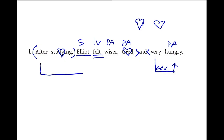The phrase 'after studying' together is functioning as an adverb, modifying the verb 'felt.' So we'll draw a line from this phrase to 'felt' and note that this is an adverbial phrase. But because it involves a preposition — 'after' is a preposition — 'studying' in this phrase is the object of a preposition, so it is also a prepositional phrase. We'll put PRP there to remind us that not only is it an adverbial phrase, but it contains a preposition, making it a prepositional phrase.